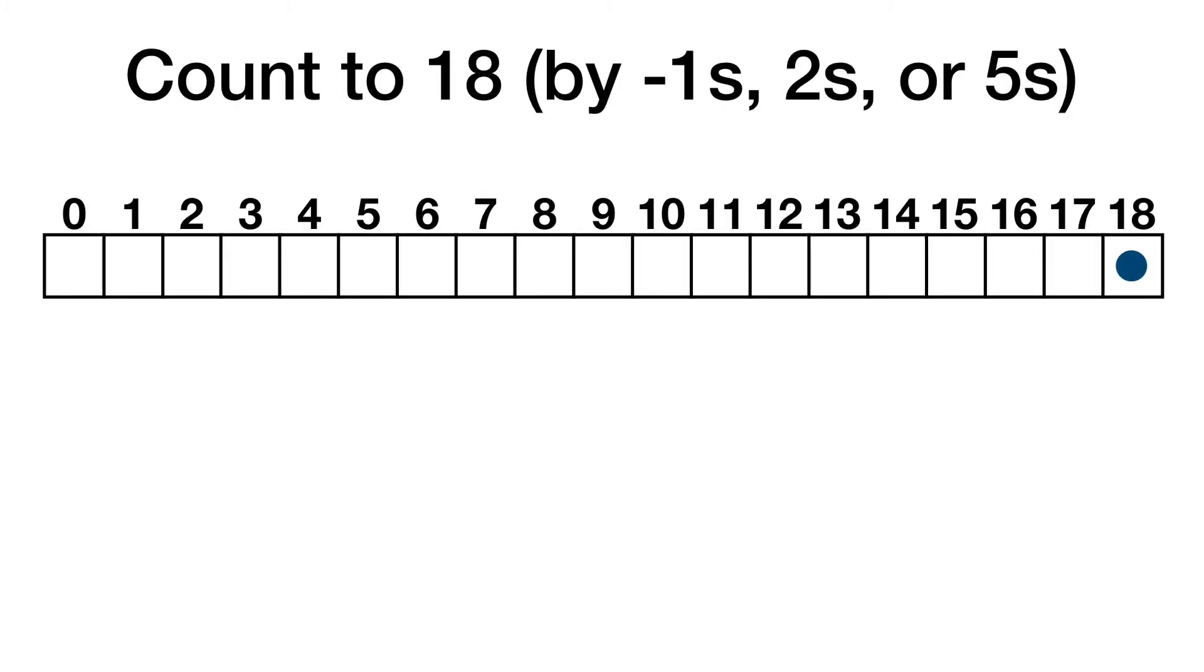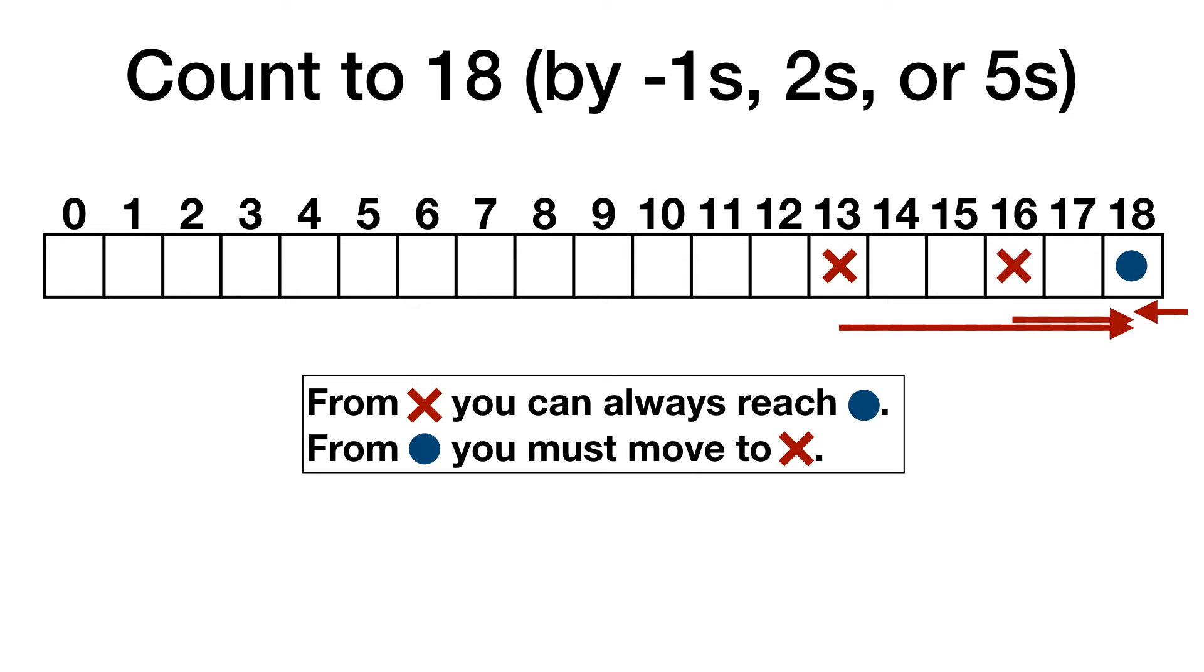Now, let's get a bit crazy and say that we can count by negative 1, 2, or 5. That means that we can count backwards 1 if we want. From 13 and 16, we can reach 18, so they get an X. From 14, we have to reach 13 or 16, so 14 gets a dot. And 17 also gets a dot because it can only reach an X. Now, 9, 12, and 15, we can reach a 14, so they get an X.